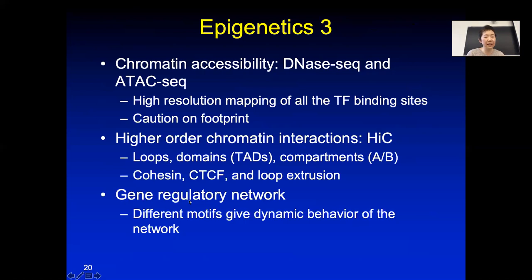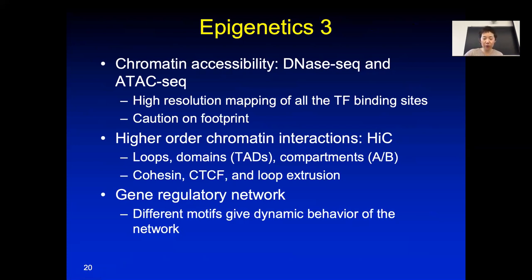We briefly explained gene regulatory networks — how you can have different modes of gene regulation. When you have a feed-forward loop or other network motifs, they explain how humans have much more fine-tuned gene regulation. We didn't evolve many more genes, but we have much more refined gene regulation because of these network motifs, allowing genes to be regulated in different modes.